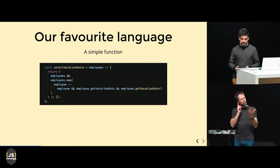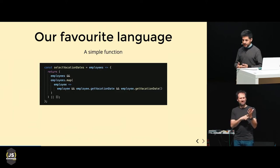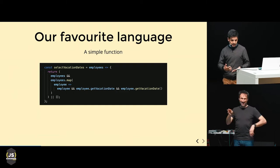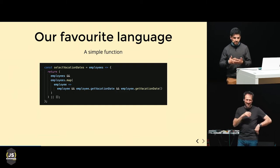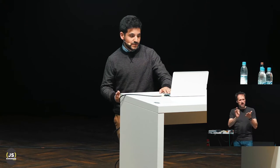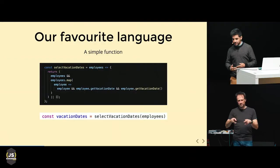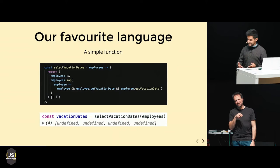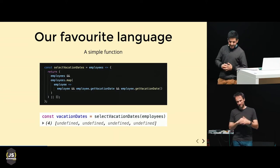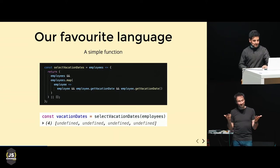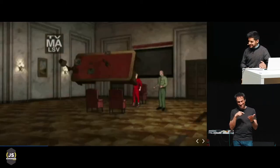Obviously two hours later we get a call from QA, and they tell us that while the table is rendering, it's rendering blanks for the dates. And just to prove them wrong, we find this line, we plug our debugger, and obviously we get this.